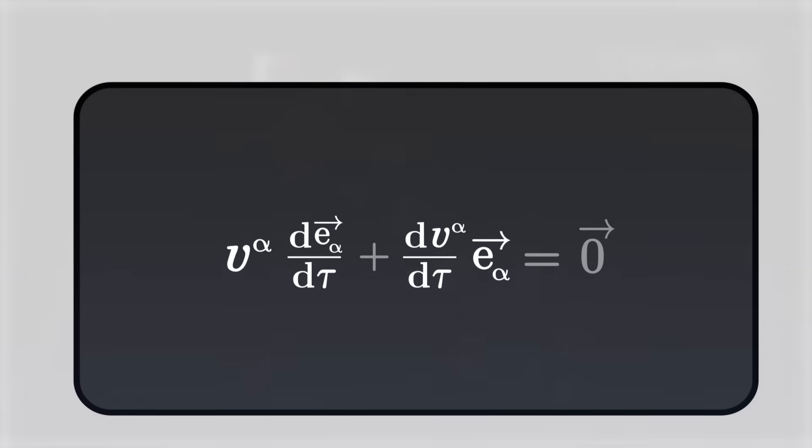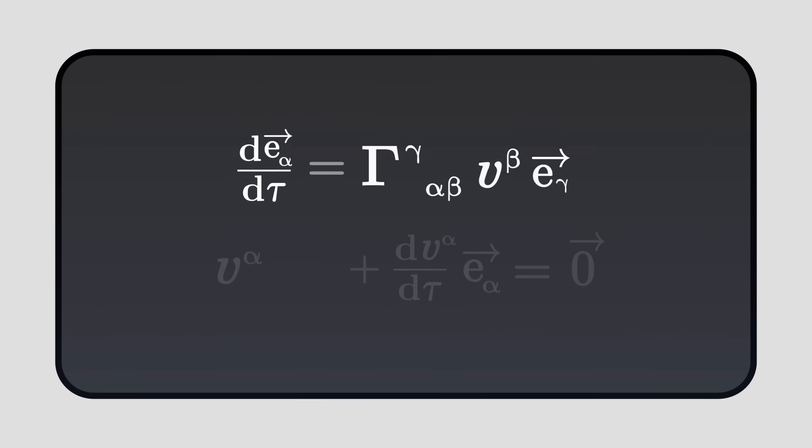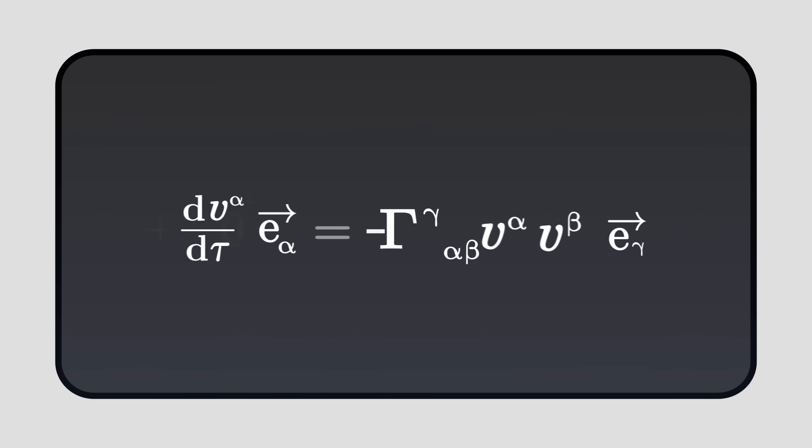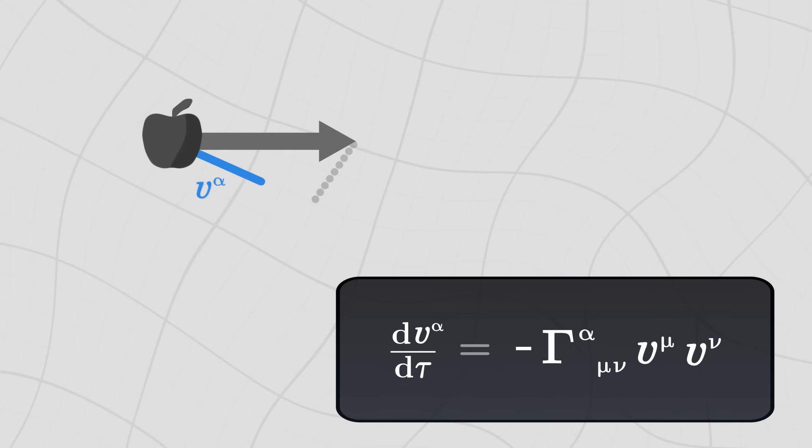Rewriting the previous equation using Christoffel symbols, we finally get to the geodesic equation. This very important equation allows us to calculate for each component of the velocity its rate of change as proper time passes.